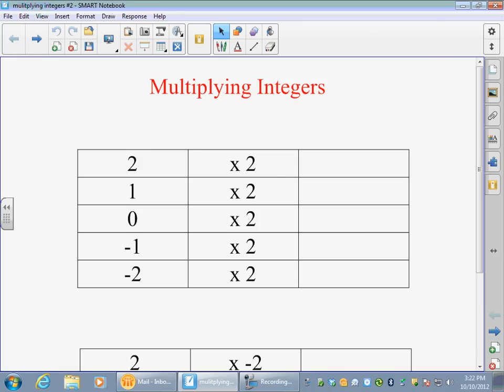So let's fill this out. Obviously we know that two times two is four. We know that one times two is two. We know that zero times anything is zero. And again, same thing as we did yesterday. Now we can look at this pattern that we have. We see that it's going down by two. It should probably go down by two again.